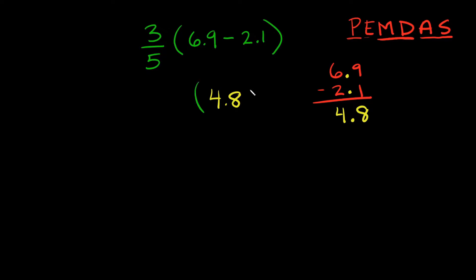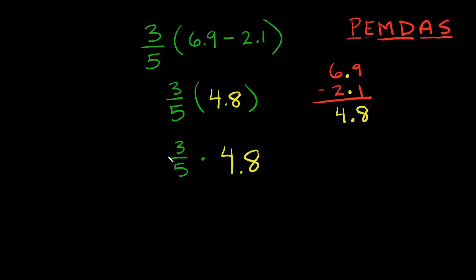I'll put my parentheses back and bring down my fraction, the 3 fifths. So now all we're left with is 3 fifths times 4.8. We have a fraction and we're multiplying it with a decimal. Both of these numbers either have to be fractions or they both have to be decimals. Normally it's a little easier to just make them both decimals, so that's what I'm going to do.